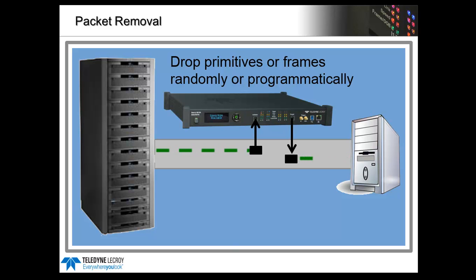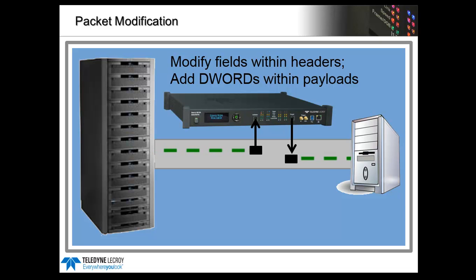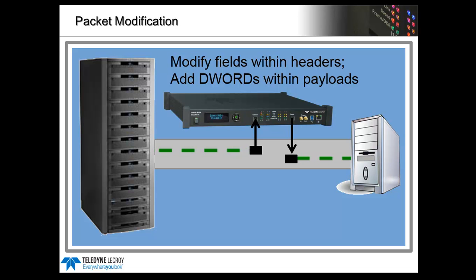Packet modification is possibly the most powerful capability we have here. You can change any field within the header or payload of a frame, and basically create countless protocol errors with this mechanism: invalid addresses, invalid commands, length mismatch, bad LBAs — literally any protocol error you can imagine you can create.